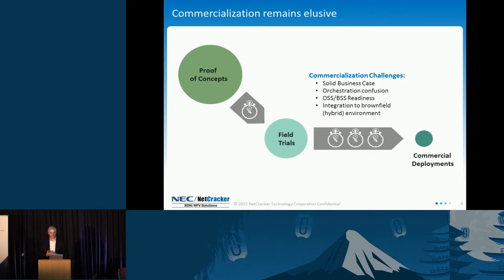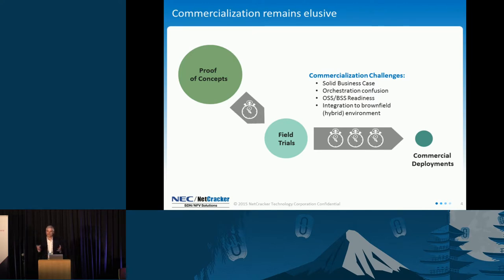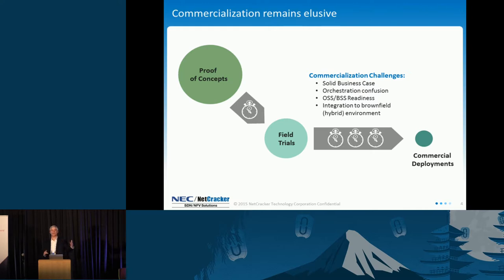Another challenge is OSS and BSS readiness. If we're going to commercialize something, we need to bill for those services and assure those services. A lot of the existing rating and charging, assurance, and policy management is not yet real-time in nature, and it's not yet ready to function in an automated way for an NFV-based service. There's a lot of evolution that needs to happen in the billing and operational environment, apart from just the service orchestration layer, that is absolutely essential to making NFV a commercial reality and therefore driving use of OpenStack for NFV.